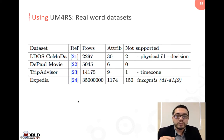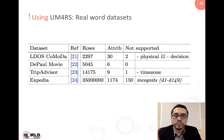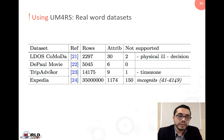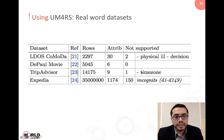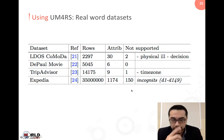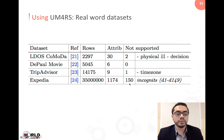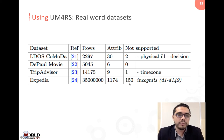We tested our proposal using real-world datasets to see if the framework supports all the information existing in these datasets. The results show that the model supports most of the information, except for the physical field of a user, the decisions, and the time zone. For one large dataset, 150 attributes were not supported, basically because they were given as anonymous, so we could not map them to any aspect of the model.